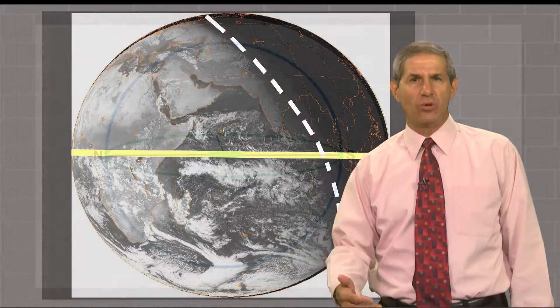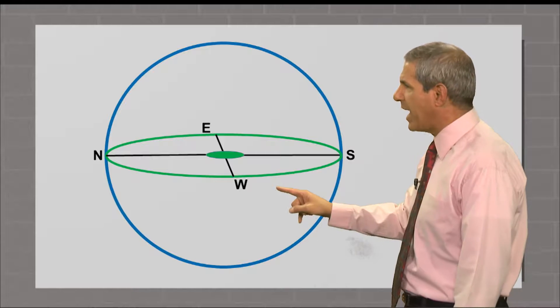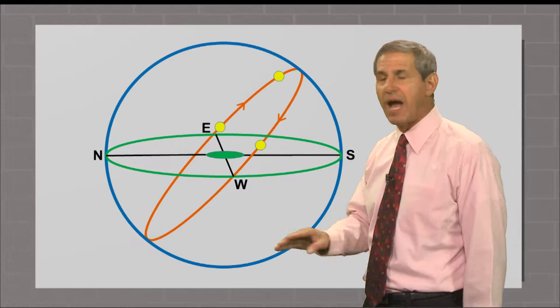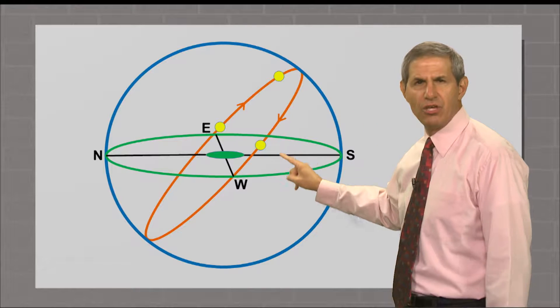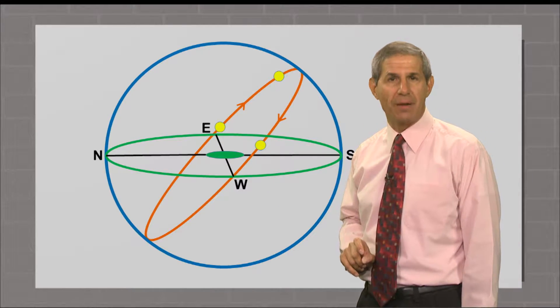Back to the equinoxes, when Mother Nature provides us with a built-in compass, a way to map out east and west on your horizon. That's because the sun truly does rise due east and set due west on both the first day of spring and the first day of autumn.